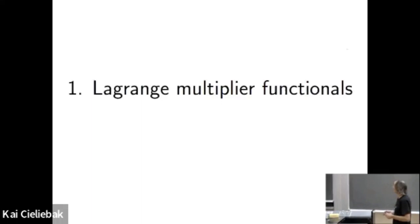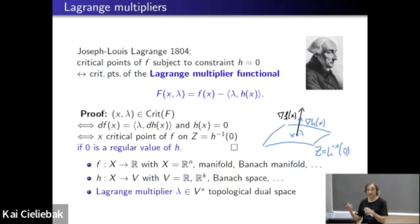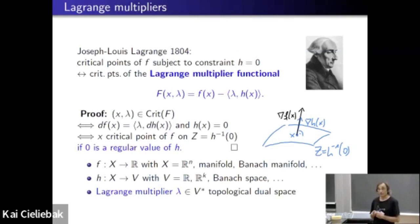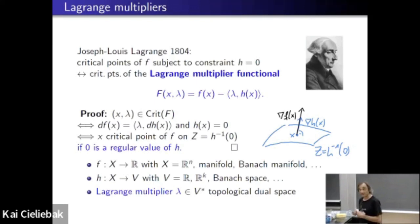What are Lagrange Multiplier Functionals? The idea goes back to Lagrange in 1804. He was looking at a variational problem: finding an extremum or critical point of a function f subject to a constraint given by another function h being equal to zero. You can reformulate that problem by introducing a new function capital F depending on an additional variable lambda — the Lagrange multiplier — where F(x, λ) = f(x) − λ·h(x). Taking the derivative with respect to x gives df(x) = λ·dh(x), and with respect to λ gives h(x) = 0.